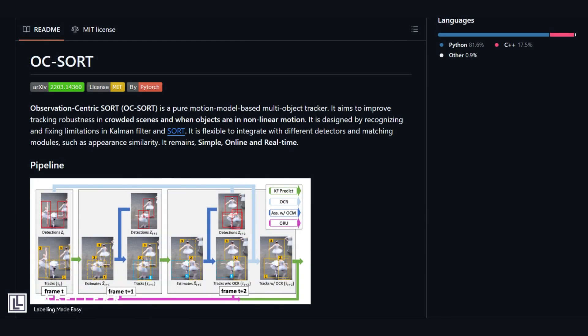Hey everyone, welcome back to the channel. Today we're diving into an exciting new approach in computer vision called Observation-Centric Sort, or OCSort for short. If you're interested in tracking multiple objects in videos — like people in a crowd, cars on a street, or athletes on a field — this is a must-watch.